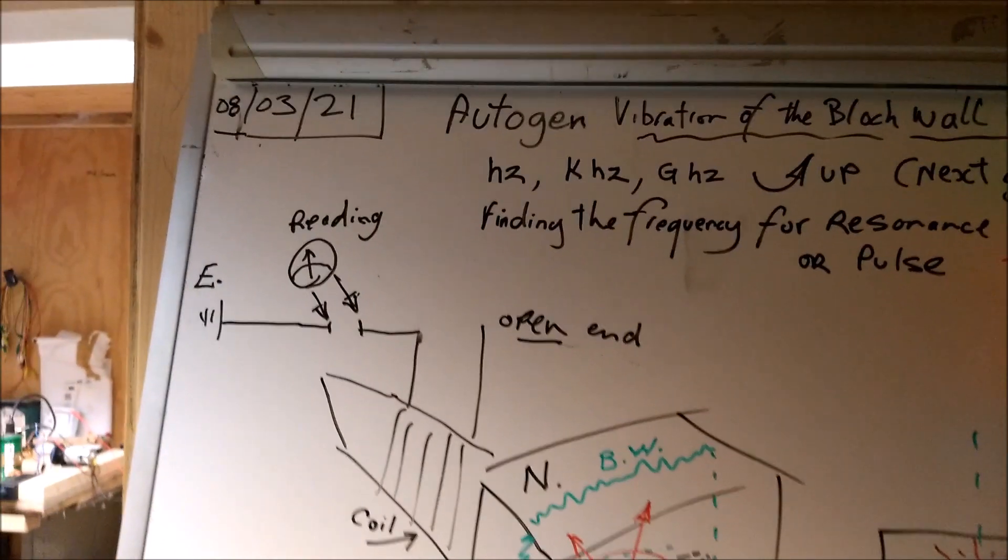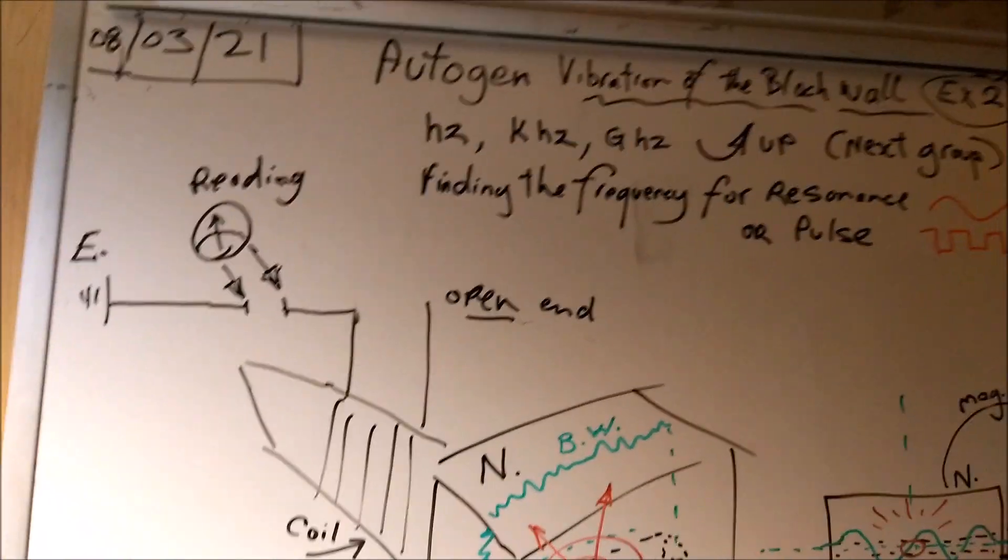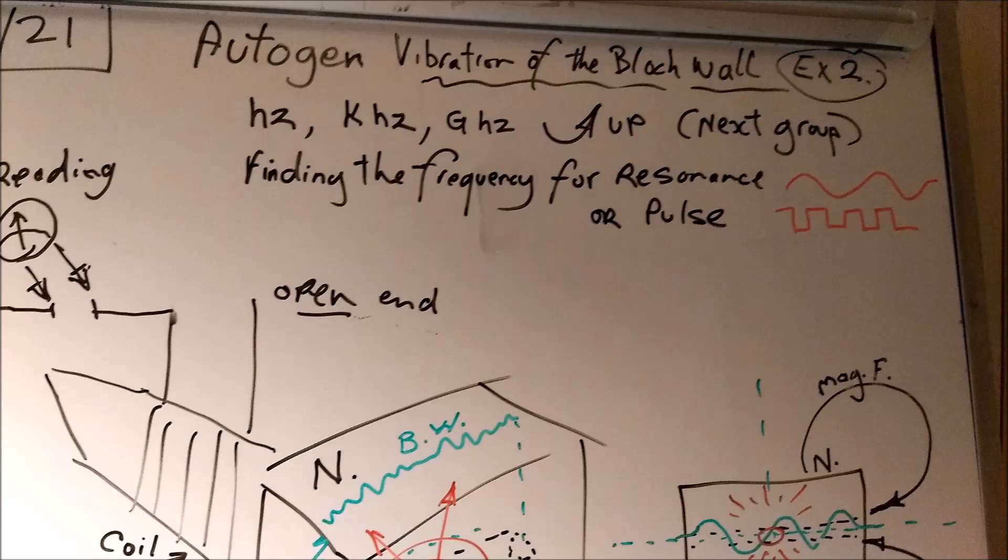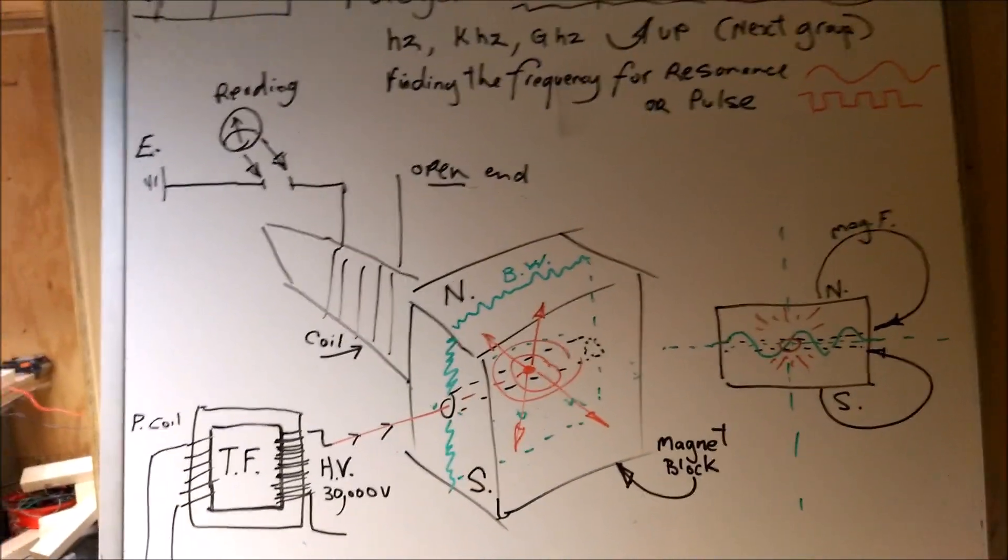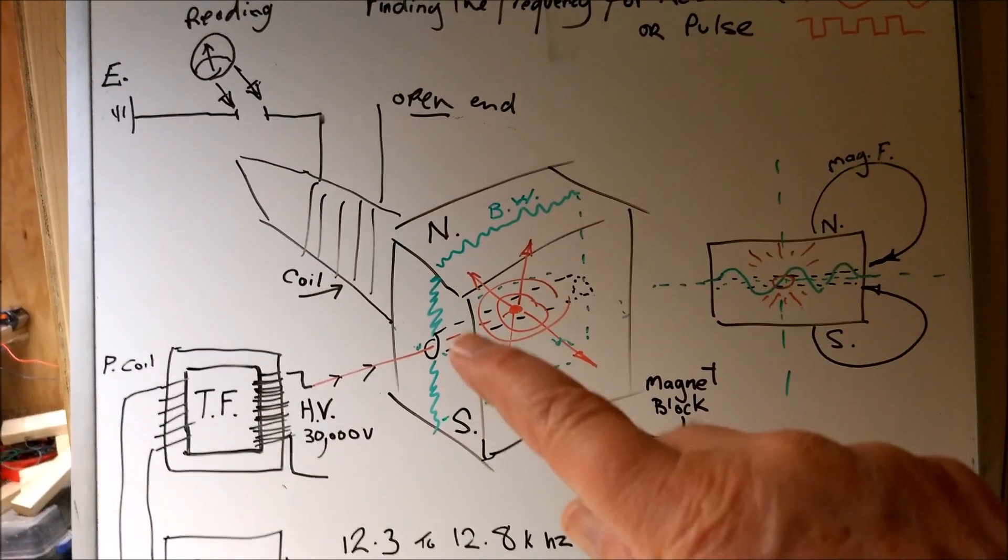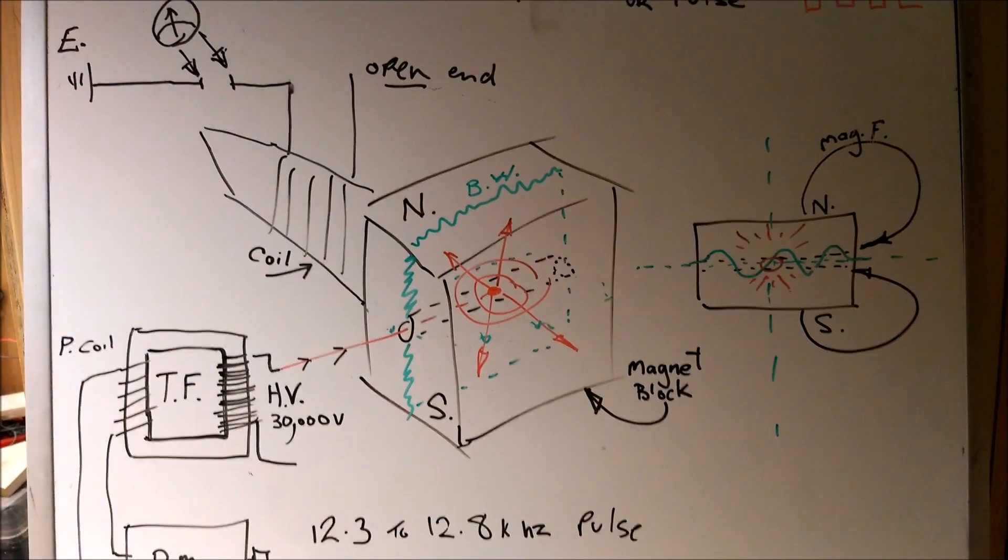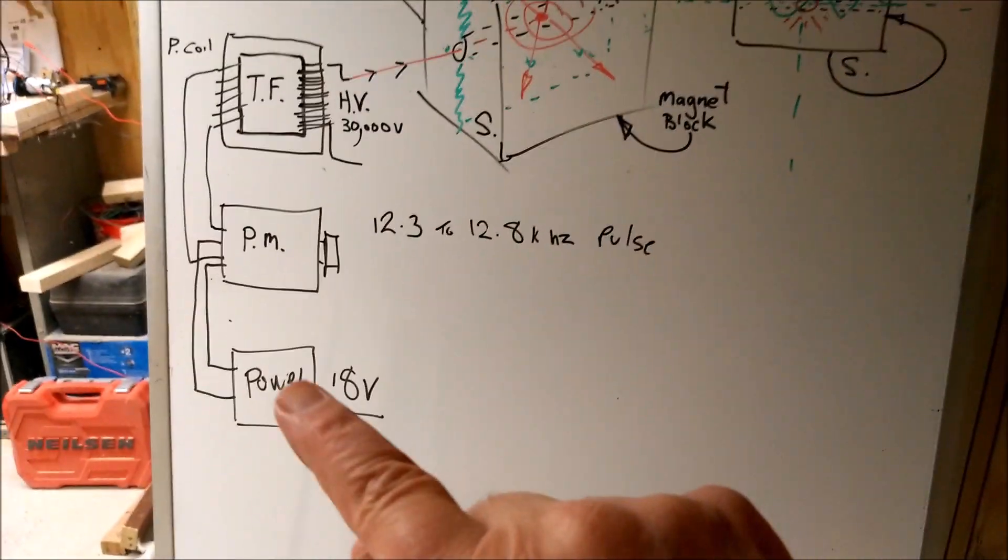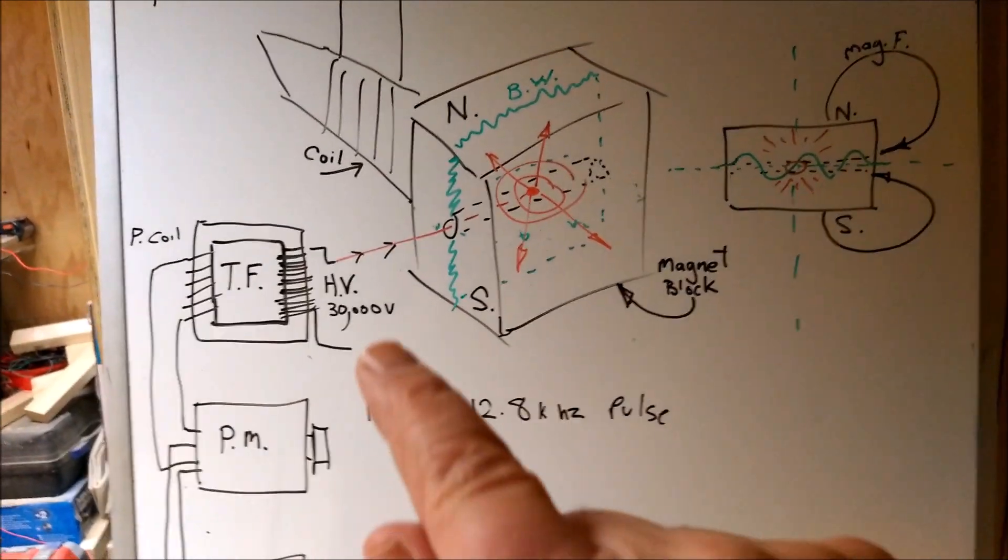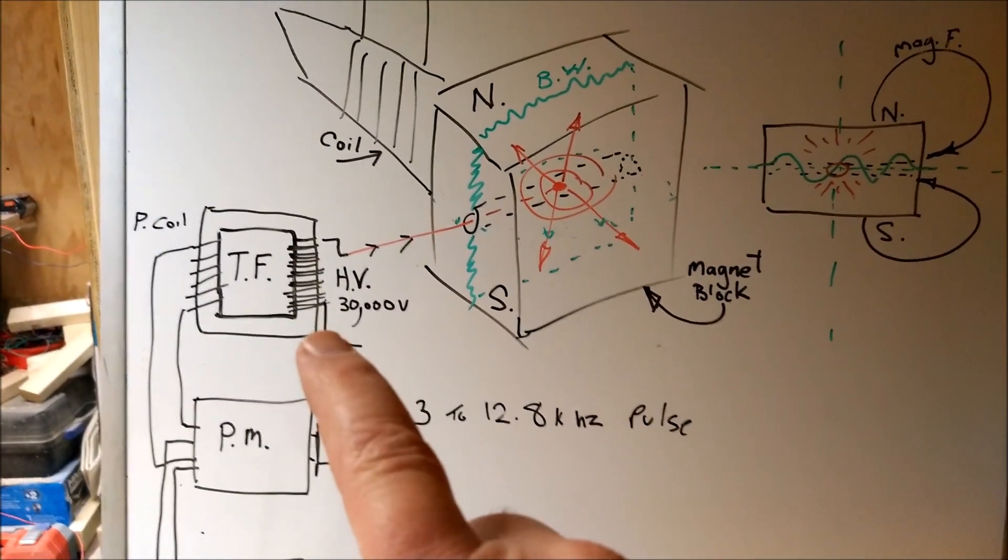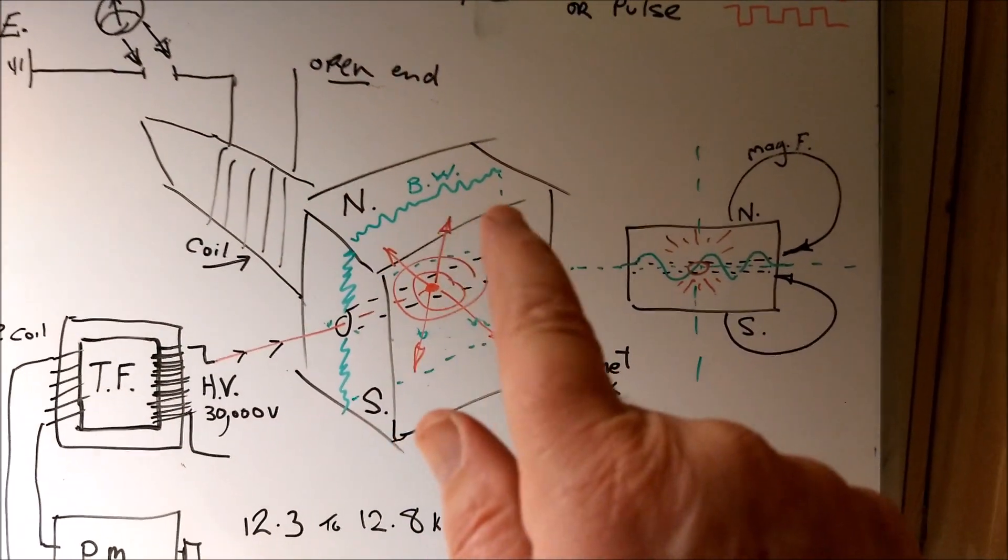Good morning everybody, DC here. It's the 8th of the 3rd, 2021, and this is experiment number two from my last video. We've got the magnet here, which is a block neodymium magnet, and we've got the setup as a power supply, pulse width modulator, a transformer to high voltage 30,000 volts, and we're pulsing the Bloch wall.